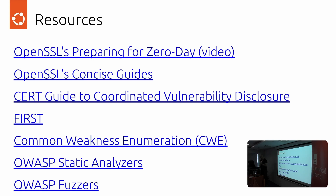Q: CVSS 4.0 just got released — do you think it will improve the scoring system? A: Possibly. They have more temporal scores in there, which are really useful to know how much impact a CVE actually has. But the issue is that the CNA has to keep updating the CVE entry to remain relevant. CVSS 3.1 already has optional fields where you can say whether a PoC exists or a patch exists, and those change over time. I'm a little reluctant about those options because the CNA has to keep updating them. It's a good thing, but you need better involvement from the CNAs.